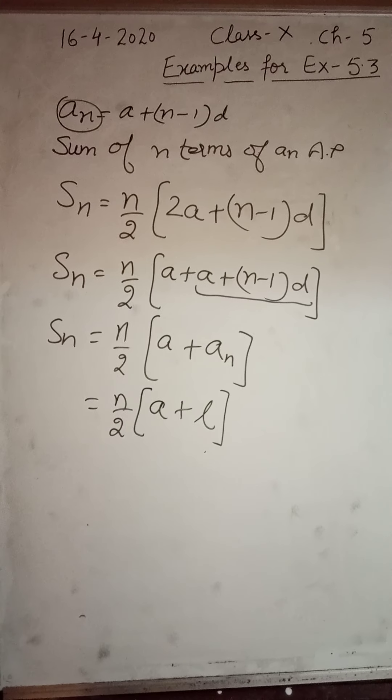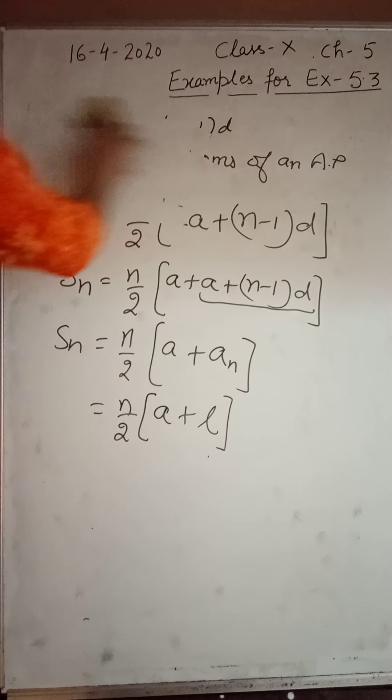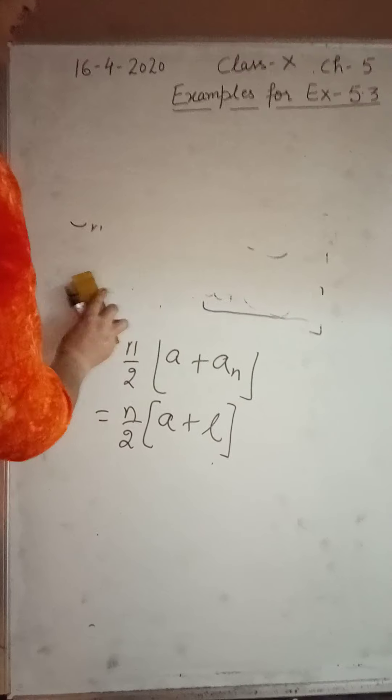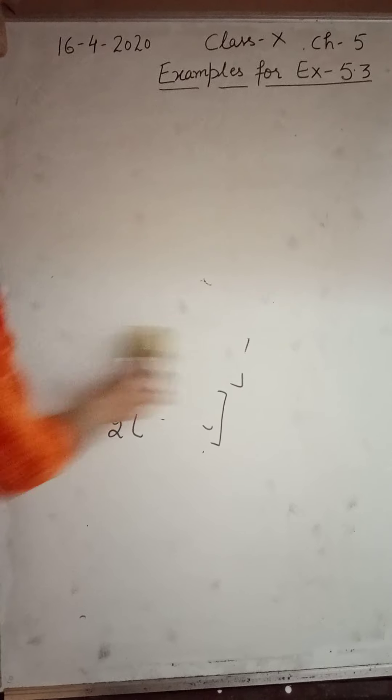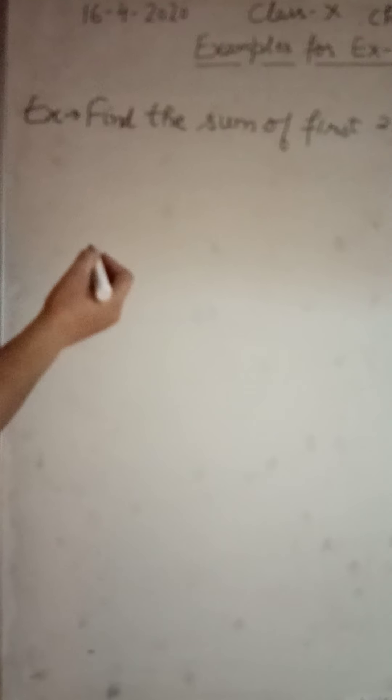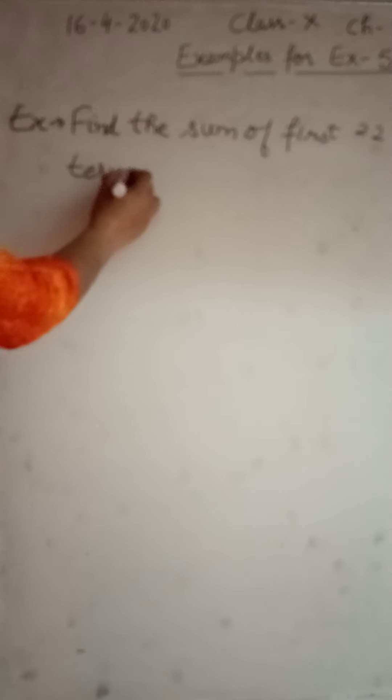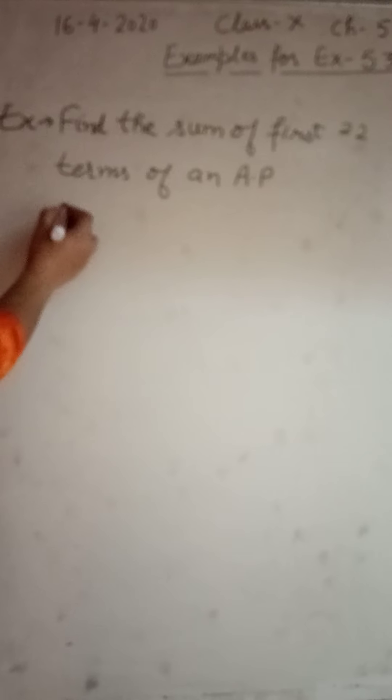Now I am going to do some examples for you people. As we are asking, find the sum of first 22 terms of an AP, where AP they have given us: 8, 3, minus 2 and so on.